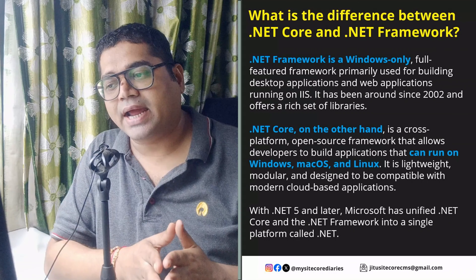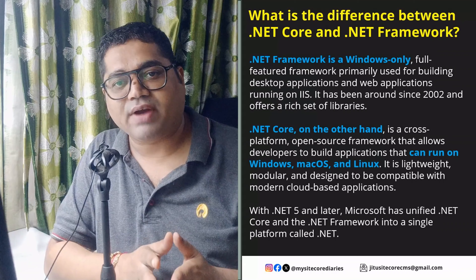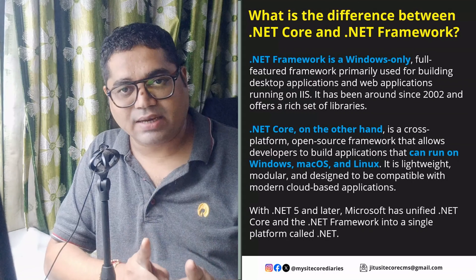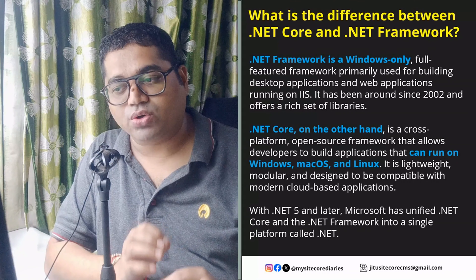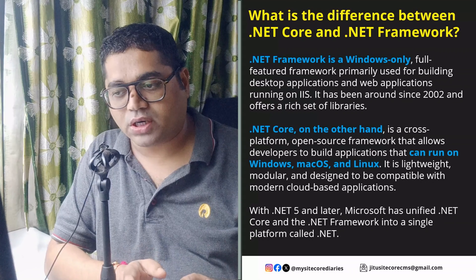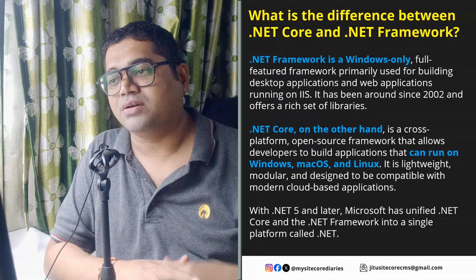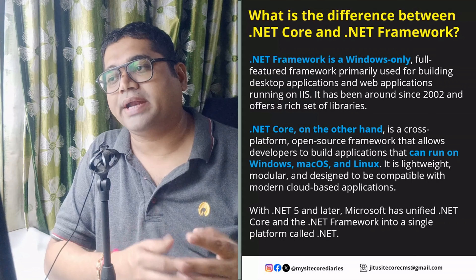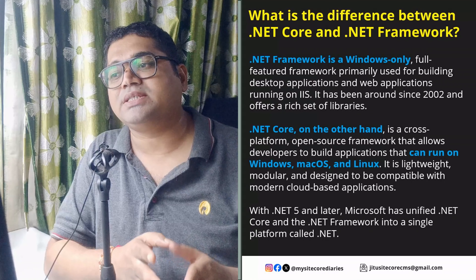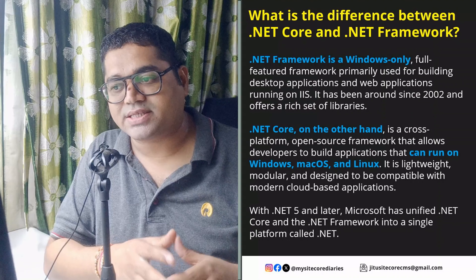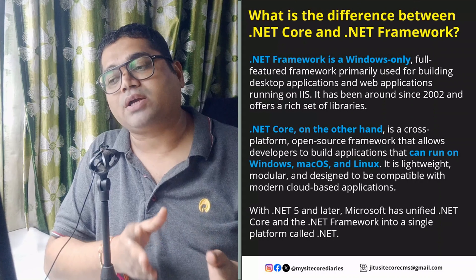With .NET 5 and later, Microsoft has unified .NET Core and .NET Framework into a single platform simply called .NET. So now .NET is essentially a combination of .NET Framework plus .NET Core. The major difference was that .NET Framework is Windows-only, while .NET Core can run on any operating system — Windows, Mac, or Linux.